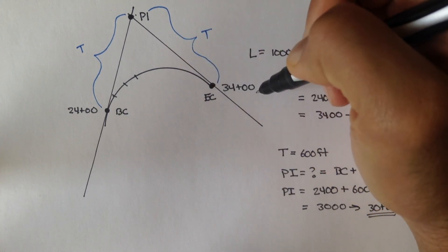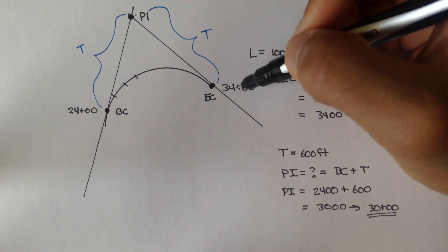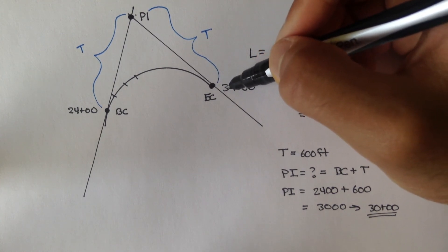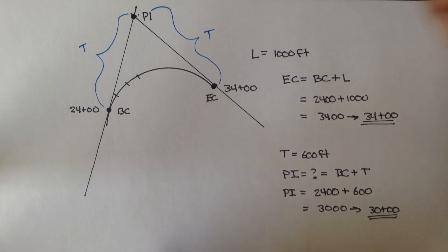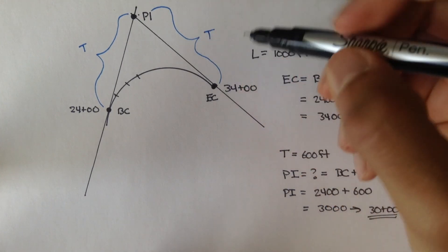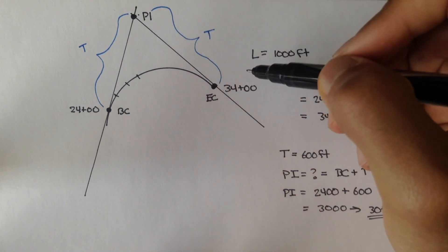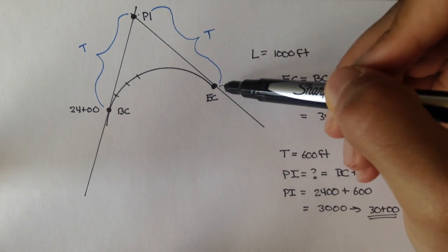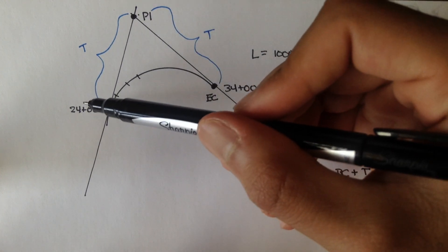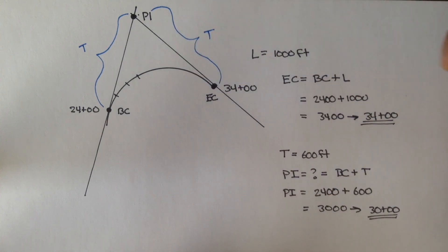So, what if you're only given EC, and you want to figure out what PI is? Well, if you're only given EC, you're going to take EC, subtract the length to get to BC, and then from BC, you would add T to get PI. I don't know why this is. I don't know why we can't just subtract T. And if you do it, you actually get two different answers. If you take 34 and subtract 600, that's 28 plus 0, 0. So, from the EC, it's 28 plus 0, 0. But, from the 2400, you add 600, you get 30 plus 0, 0. So, there's a difference. I don't know why that is the way it is.